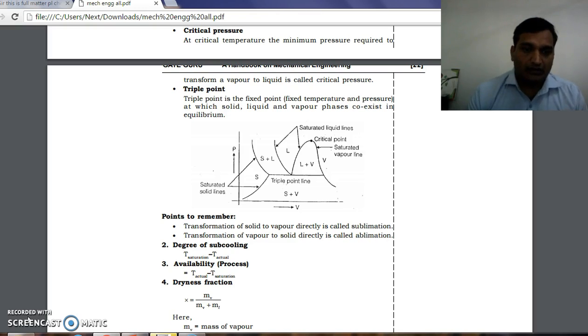Now we will see some terms like degree of subcooling. Degree of subcooling is the difference between saturation temperature and actual temperature. So we can write T_saturation minus T_actual.